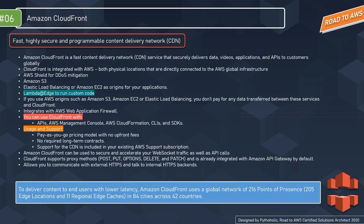CloudFront can secure and accelerate web socket traffic and API calls. It supports proxy methods such as POST, PUT, OPTIONS, DELETE, and PATCH, and is already integrated with Amazon API Gateway by default. CloudFront also allows communication with external HTTPS endpoints and internal HTTPS backends. To deliver content with lower latency, Amazon CloudFront uses a global network of 216 points of presence — 11 regional edge caches in 84 cities across 42 countries.